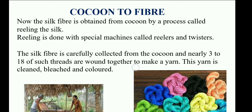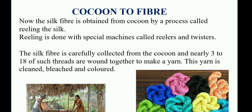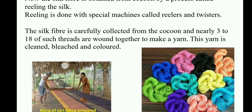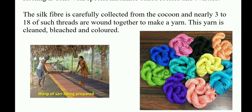Third step: cocoon to fiber. Silk fiber is obtained from the cocoon by a process called reeling. Reeling is done with special machines called reelers and twisters. The silk fiber is carefully collected from the cocoon, and nearly 3 to 18 such threads are wound together to make a yarn. This yarn is then cleaned, bleached, and colored.